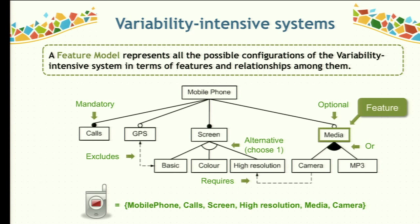So the core support for the mobile phone, GPS support, screen, media, and so on are all represented as features. The relationships among the features are represented by edges. Hierarchical relationships are divided into mandatory relations, represented by a filled circle. Mandatory features like core are features that always have to be included in all configurations. The GPS, for example, is an optional feature for mobile phones.